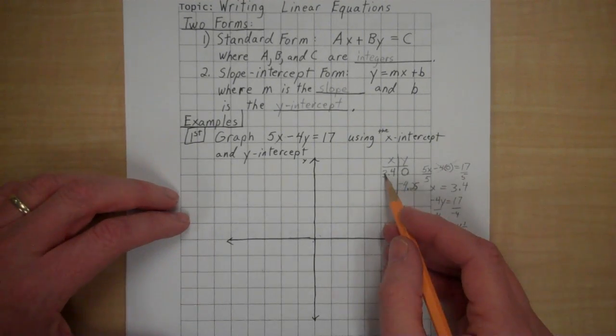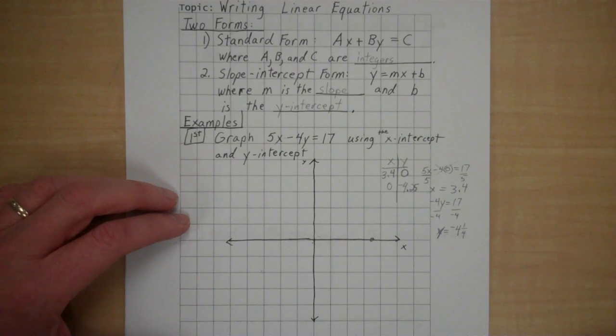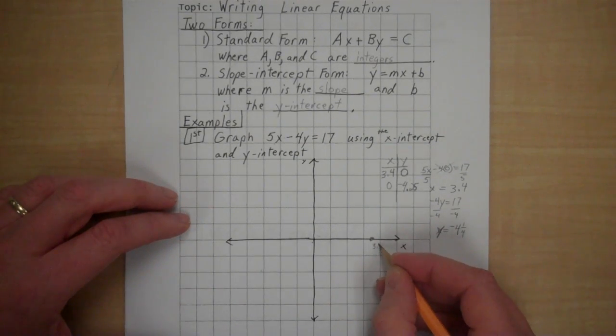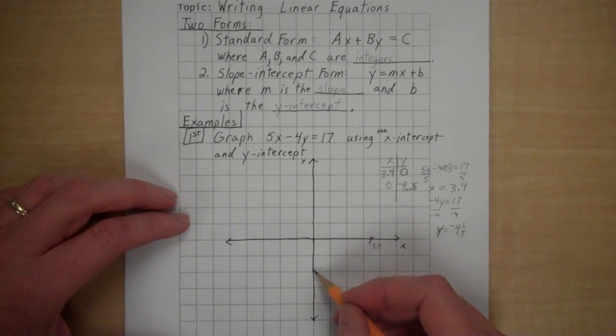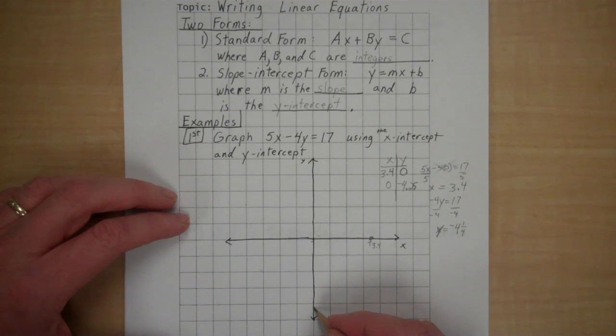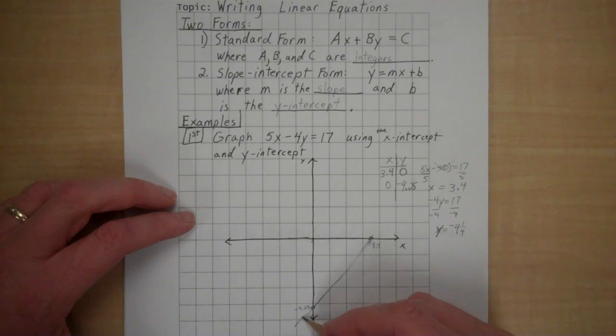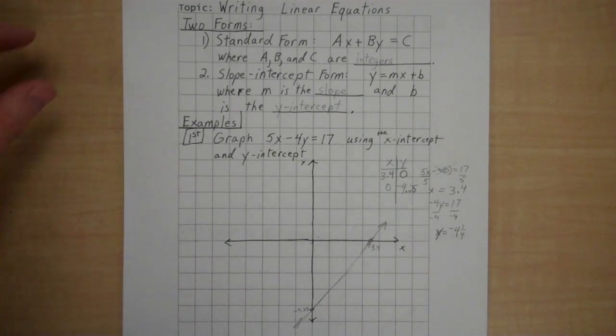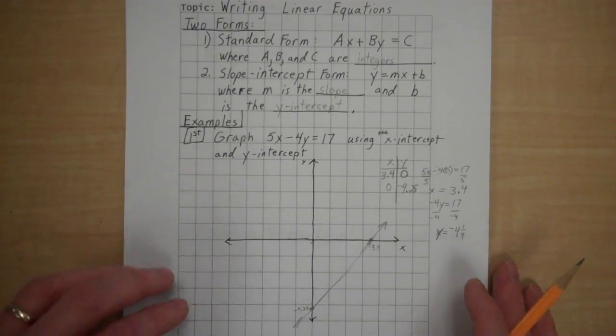So to graph that, x is 3.4. 1, 2, 3. 0.4 is right there. A little less than halfway. That is the x-intercept, 3.4 right there. And y is negative 4.25. Negative 1, negative 2, negative 3, negative 4 and 1 quarter. Negative 4.25 is right there. And then we will just connect those two with a line. So that is using the y-intercept and the x-intercept to graph.